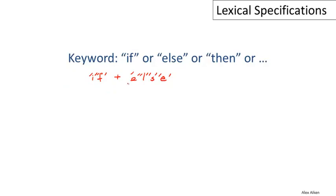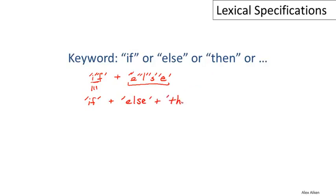If I want to write the regular expression for a sequence of single-character expressions, I could just put quotes around the outermost characters in the sequence. For example, most tools will let you write this: I put a quote at the beginning, write IF, then close quote. This means exactly the same thing — the concatenation of two single-character regular expressions — and similarly for else and then. If I have more keywords, I just write them out and union them all together.